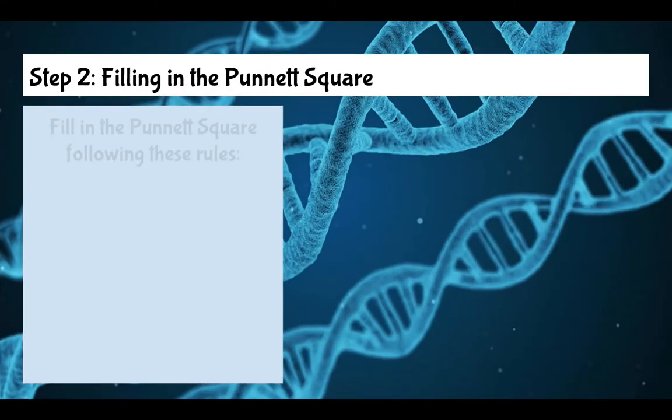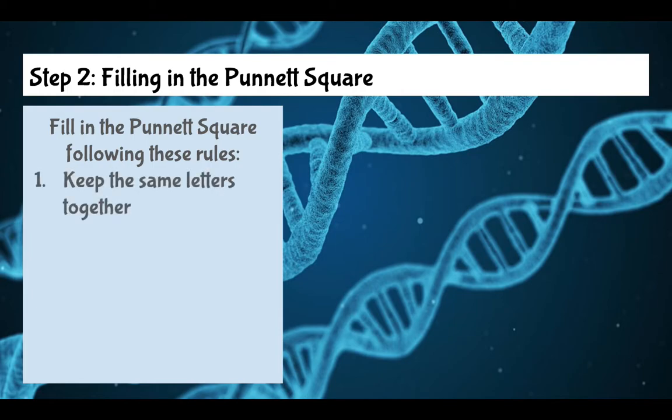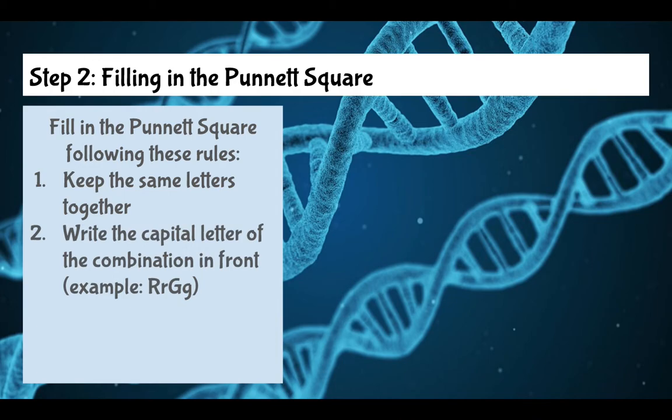It is important to remember that you will only have two letters over each box. With your monohybrids, you're only ever going to have one letter over each box because you're just doing one trait. With your dihybrid, you're always going to have two letters over each box. Now we need to fill in the Punnett square. We have to follow a couple of rules. The first rule is keep the same letters together—that means don't write R G R G or G R G R, keep the R's together and the G's together, just like in math when you do like terms. You also write the capital letter of the combination in the front.